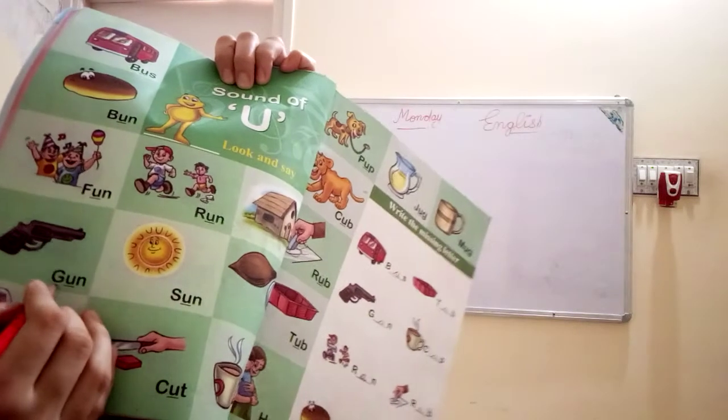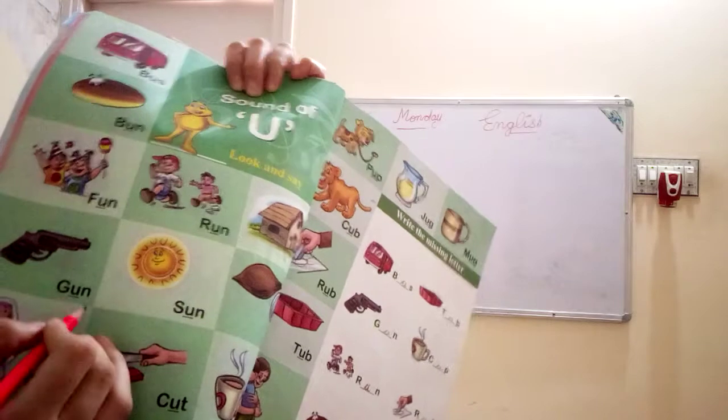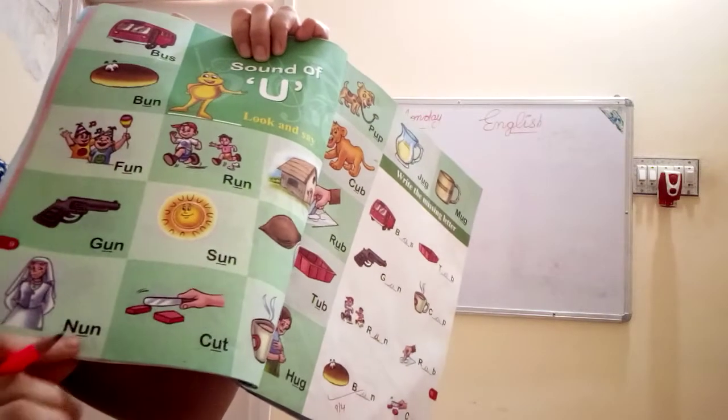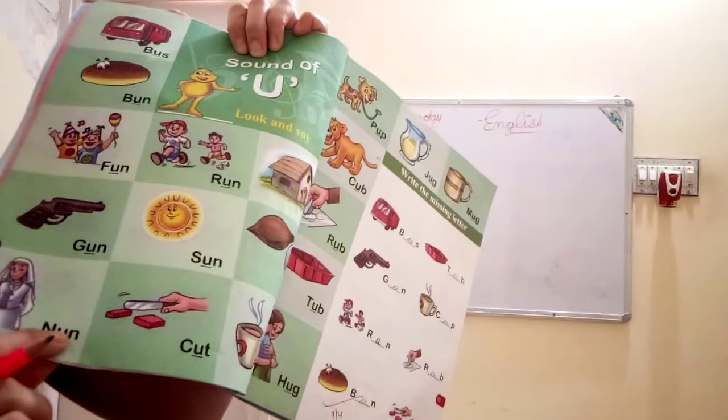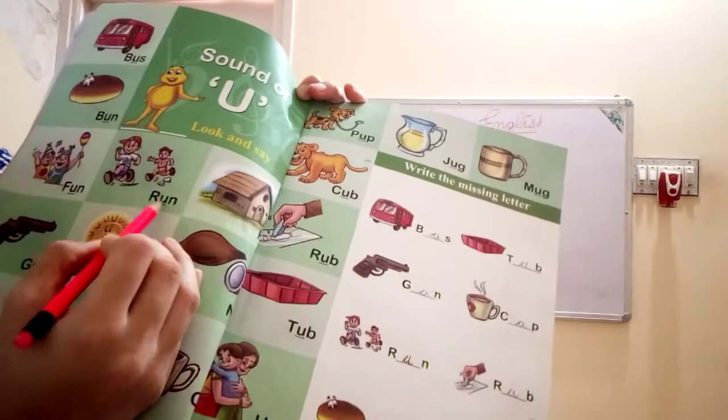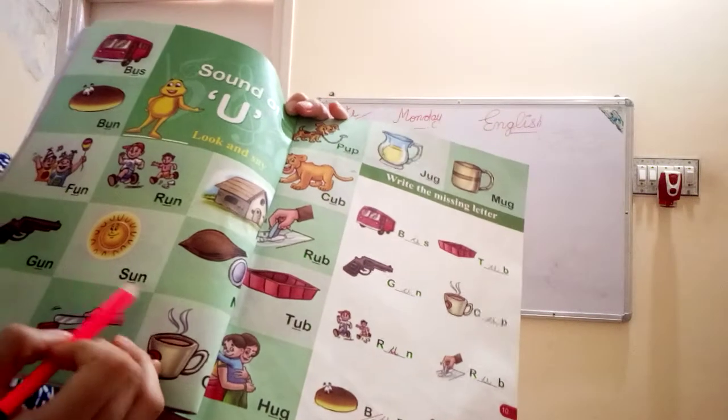Gun. Gun ki spelling kya hogi? G.U.N. Gun. Next. N.U.N. Nun. Nun ki spelling kya hogi? N.U.N. Nun. Next. Run. R.U.N. Run. Next. Sun. S.U.N. Sun.